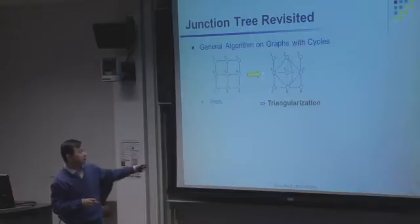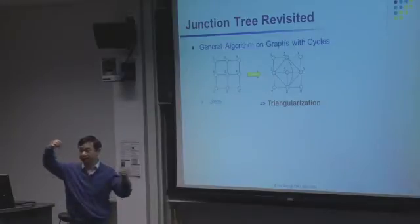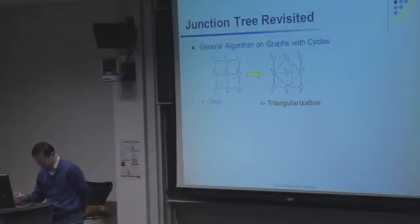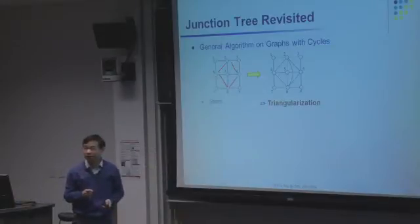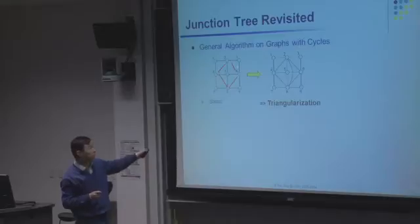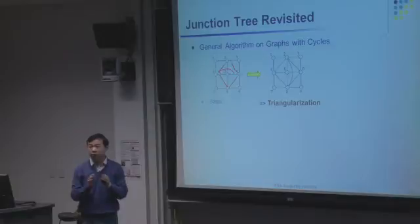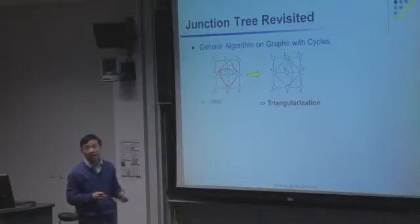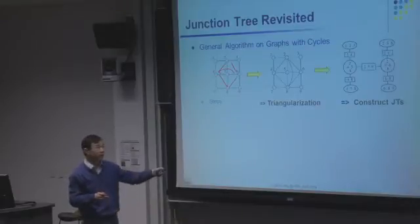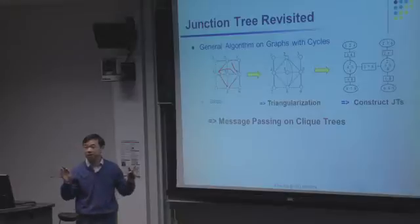The basic idea is: if you see any cycle with more than three nodes, you need to triangulate it by putting a chord in between. After triangulation, you run a maximum spanning tree algorithm on the cliques to get a junction tree, then run message passing on that tree. That's essentially all we can do for exact inference. The algorithm has messages going back and forth and getting recalibrated.